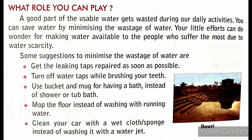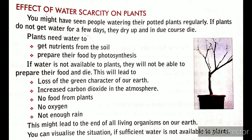The next topic is the effect of water scarcity on plants. If there is a shortage of water, what effect will it have on plants? Plants need water to get nutrients from the soil and to prepare food by the process of photosynthesis. If water is not available, plants will not be able to prepare food and may die. This would result in loss of green cover on earth, increased carbon dioxide in the atmosphere, no food for plants, no oxygen, and not enough rain — and living organisms on earth will not be able to survive.